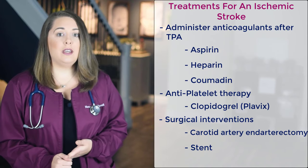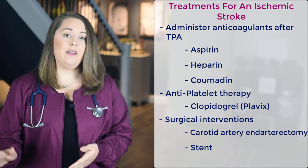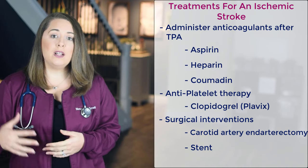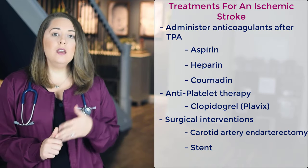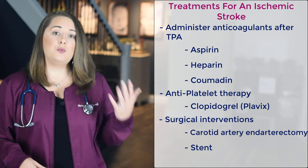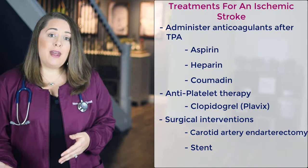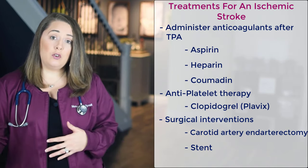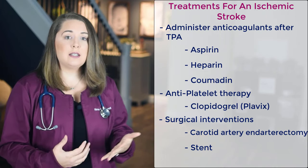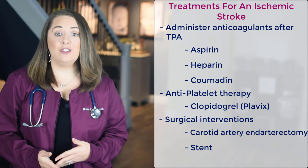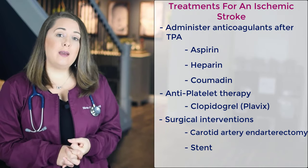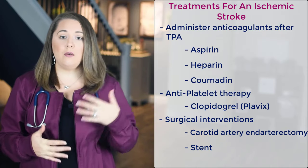After TPA is given, administer anticoagulants — typically aspirin orally and heparin IV — then switch to Coumadin once the INR is at a therapeutic level between 2 and 3. Antiplatelet medications such as clopidogrel or Plavix are also used to decrease platelet stickiness and prevent future clots. Surgical interventions for ischemic stroke include a carotid artery endarterectomy to remove plaque buildup, or placement of a stent in the carotid artery for narrowing or impaired blood flow.